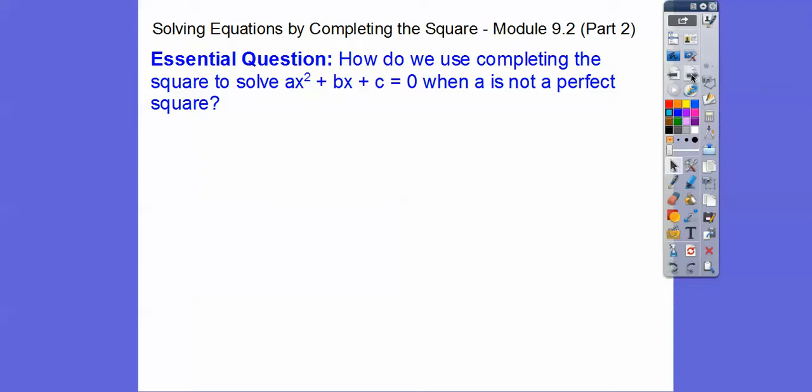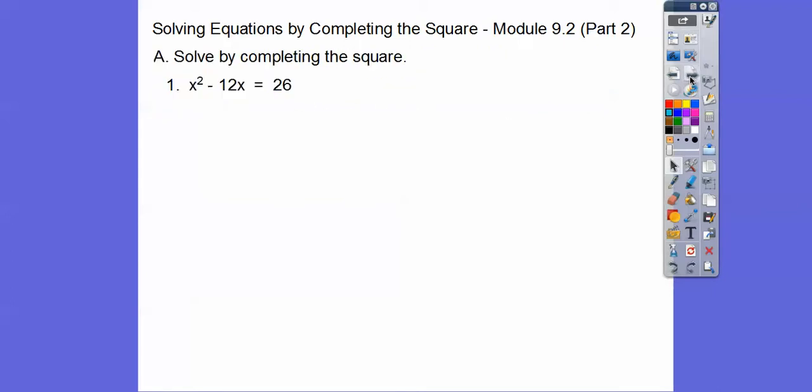So here's our question. How do we use completing the square to solve ax squared plus bx plus c equals 0 when a is not a perfect square? Okay, so the last one we had it when a was a perfect square. So here we go.